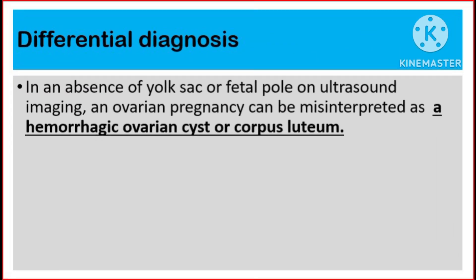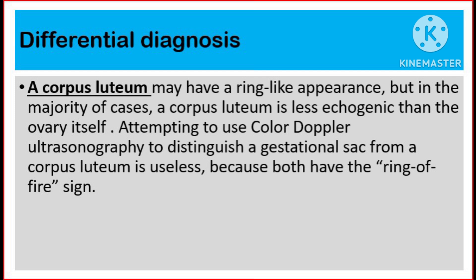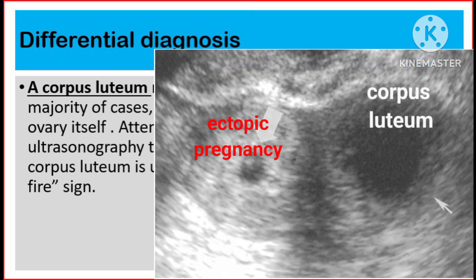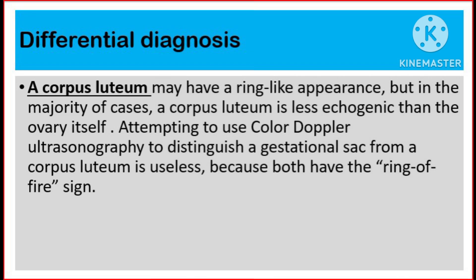Differential diagnosis. In the absence of a yolk sac or fetal pole on ultrasound imaging, an ovarian pregnancy can be misinterpreted as a hemorrhagic ovarian cyst or corpus luteum. A corpus luteum may have a ring-like appearance, but in the majority of cases, a corpus luteum is less echogenic than the ovary itself. Attempting to use color Doppler ultrasonography to distinguish a gestational sac from a corpus luteum is useless because both have the ring of fire sign.